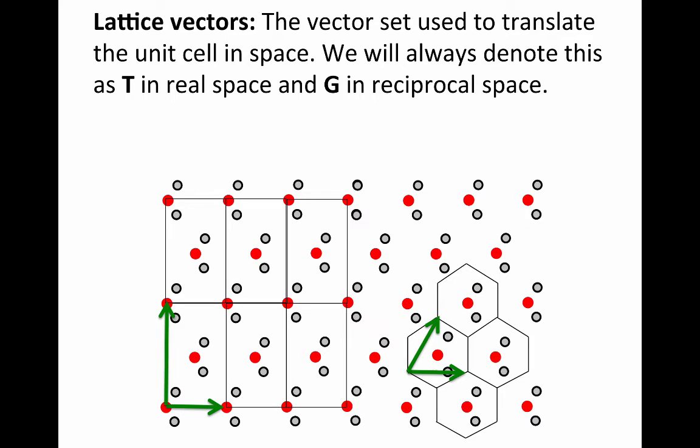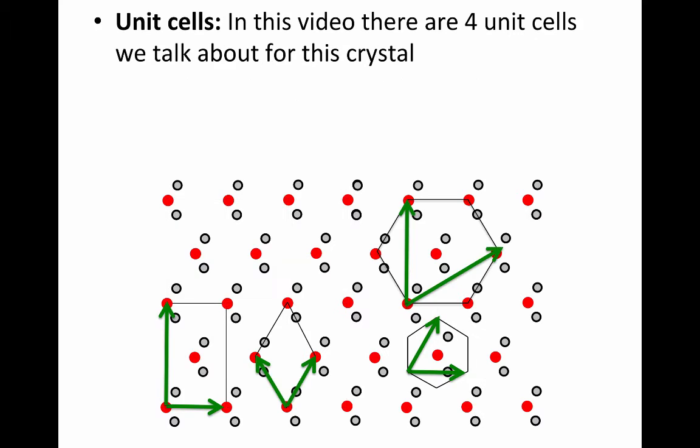In this class, we'll always denote the lattice vectors as T if we're working in real space and we'll use G when we're working in reciprocal space. In this video, we're considering four different unit cells and we can see that the four different unit cells each have their own unique lattice vectors.